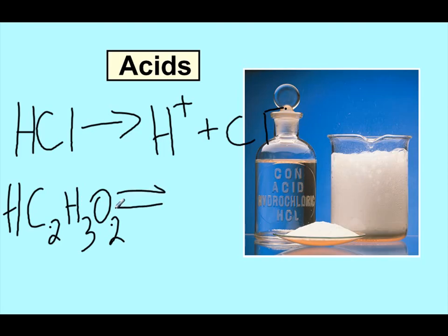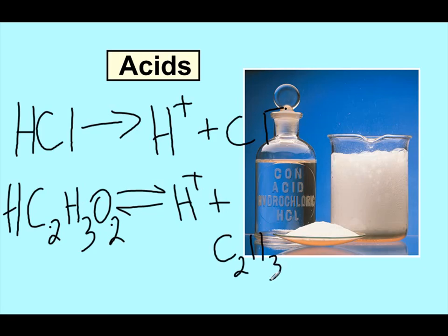Compare that to a weak acid like acetic acid. What you actually see is it sets up an equilibrium in which only some of the acetic acid produces hydrogen ion and acetate anion. Because it only produces some of those pieces, we don't get a hundred percent, and that's why acetic acid is classified as a weak acid or a weak electrolyte.